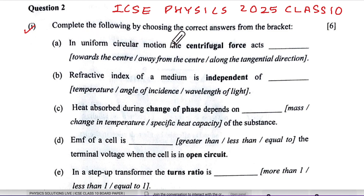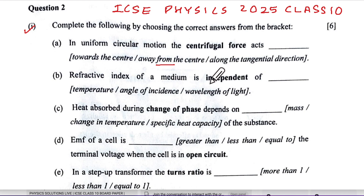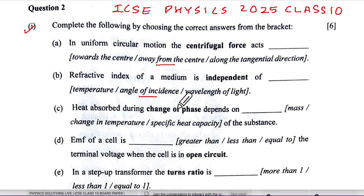In a uniform circular motion, centrifugal force acts away from the center — that is correct. For part b, the refractive index of the medium is independent of the angle of incidence. It depends upon temperature and wavelength inversely, but not on the angle of incidence, so angle of incidence is the correct option.